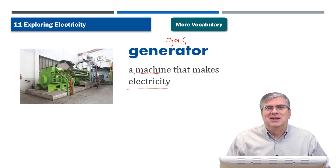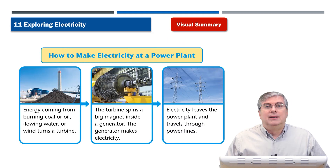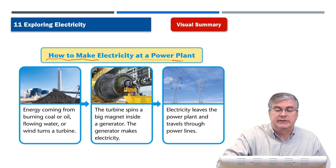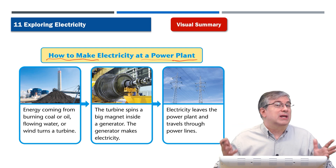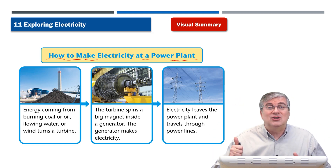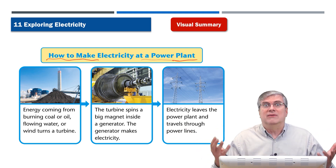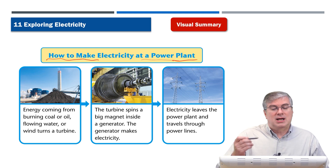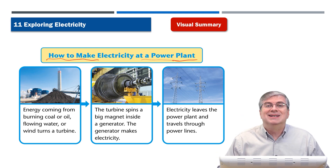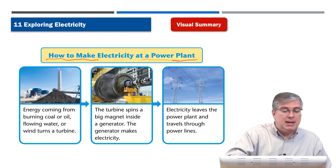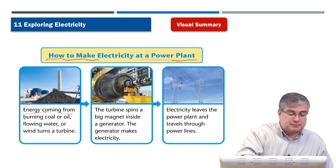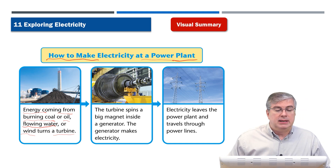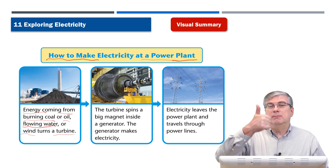One of the main ideas for this lesson is how to make electricity at a power plant. We don't usually think about it — we just hit the switch to turn on the electricity without wondering where that power comes from. Well, it comes from a power plant. There are three steps. First step: energy coming from burning coal or oil, flowing water, or wind turns a turbine.